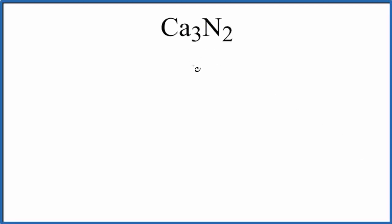In this video, we'll write the Lewis structure for Ca3N2. This is calcium nitride. So calcium nitride is an ionic compound. We'll start by writing the calcium atoms. We have three of those. Then we have the two nitrogen atoms.